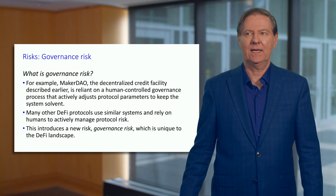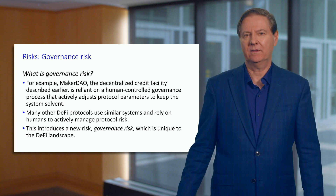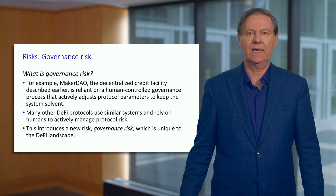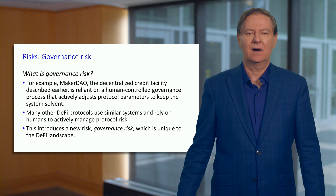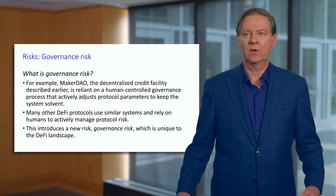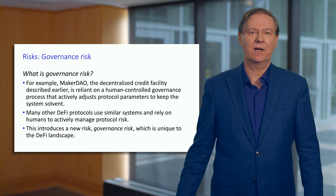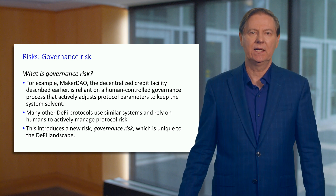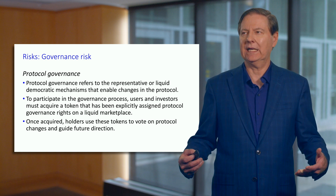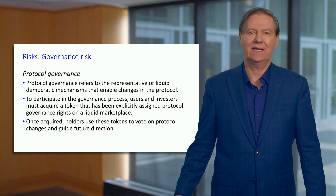We've gone through different types of risk, including smart contract risk. Even MakerDAO, which is a decentralized credit facility, has governance with the Maker token — decentralized governance. So is it possible that a group of people could gain control of the governance token and do things that undermine the actual protocol? That's a type of governance risk.